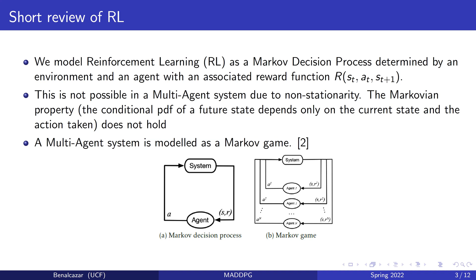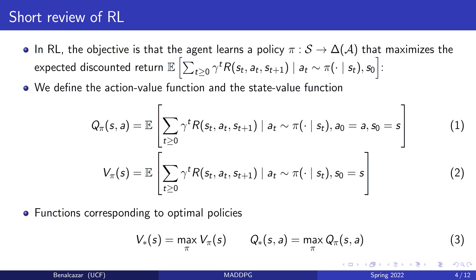The reward is given by a reward function that is determined as a function of the current state, the action taken, and the new state. When we try to expand this to a multi-agent system, this is not possible because of a lack of stationarity. Every MDP assumes the Markovian property holds, meaning the conditional PDF of the future state depends only on the current state and the action taken. In a multi-agent system this doesn't hold, because it also depends on the actions of other agents. It can be modeled as a Markov game, as shown in this figure, where the system is changed by the actions of every agent and each has access to the new state and a different reward.